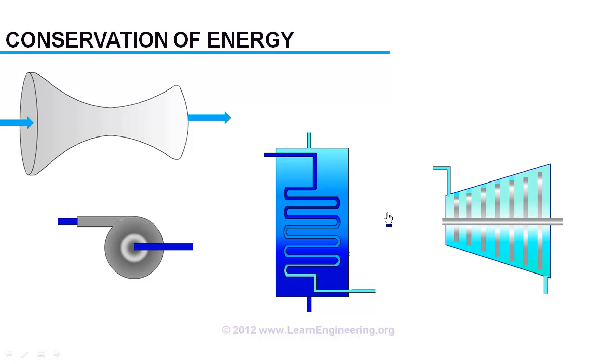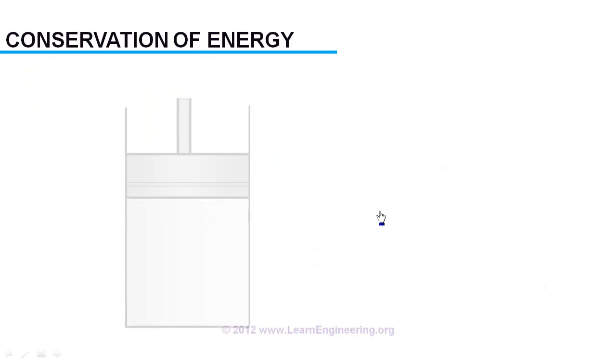We will understand how first law is applied for a thermodynamic system by analyzing a simple example: a piston-cylinder arrangement. The cylinder has some gas inside and assume there's no air leakage to the surrounding. This is an example of a closed system where mass doesn't change.